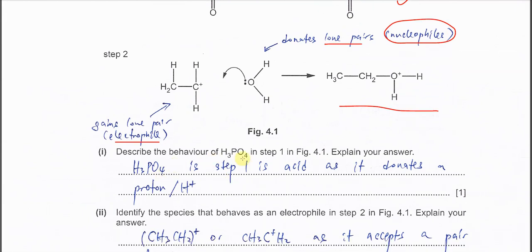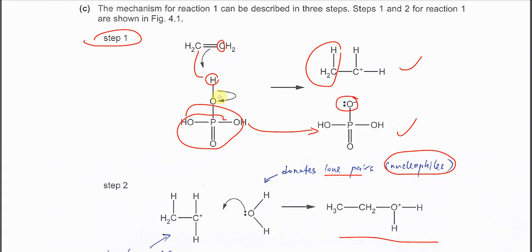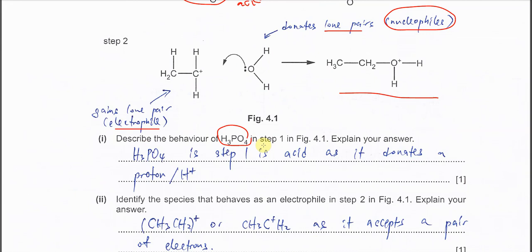The first sub-question asks: describe the behavior of phosphoric acid in step 1. Before and after step 1, phosphoric acid has lost one proton. When a species loses a proton, it is acting as an acid according to Brønsted-Lowry acid-base theory. Therefore, H3PO4 in step 1 is the acid because it donates a proton.